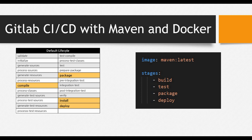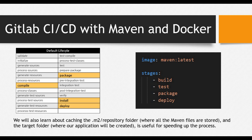We'll also see how the caching mechanism works in GitLab. We will cache the .m2 repository where Maven files are stored, and also the target folder where, once you build or package your application, the JAR or WAR file will be saved. This caching will help speed up the whole pipeline process.